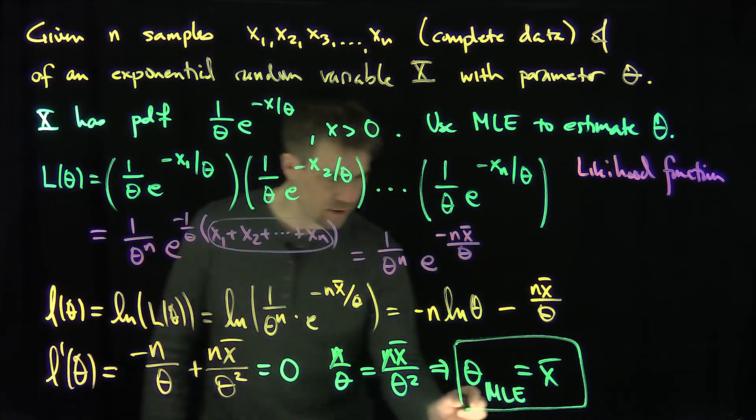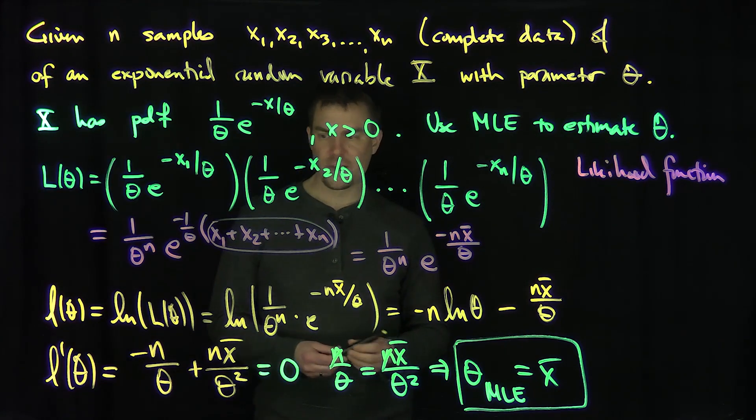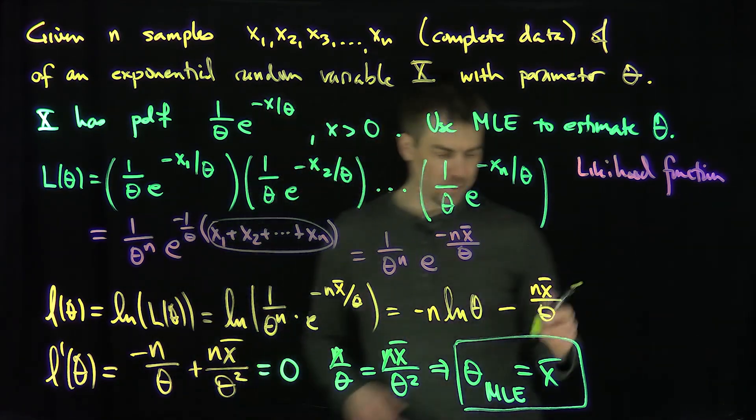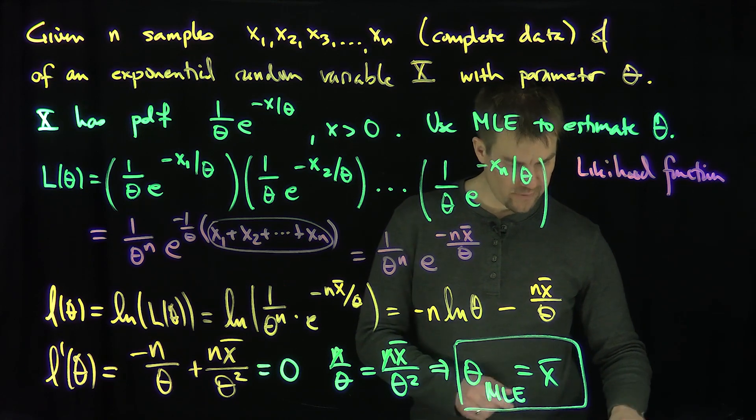So the sample mean is the maximum likelihood estimator for the exponential random variable. Technically, we should do the second derivative over here. What's the second derivative? Just to check.